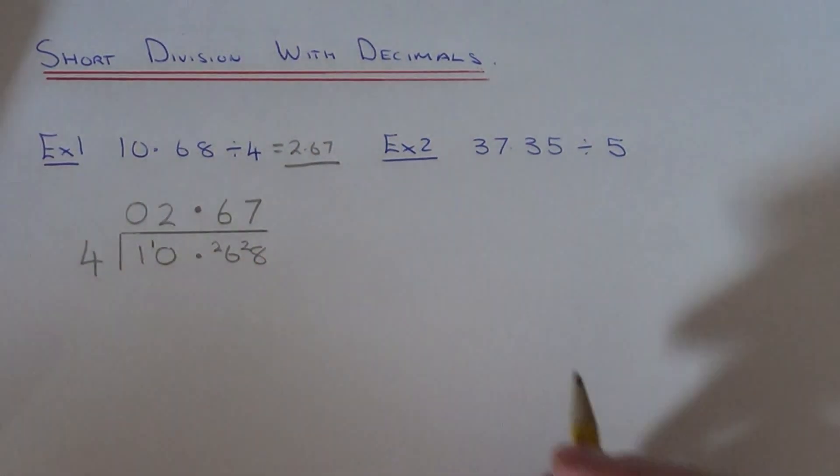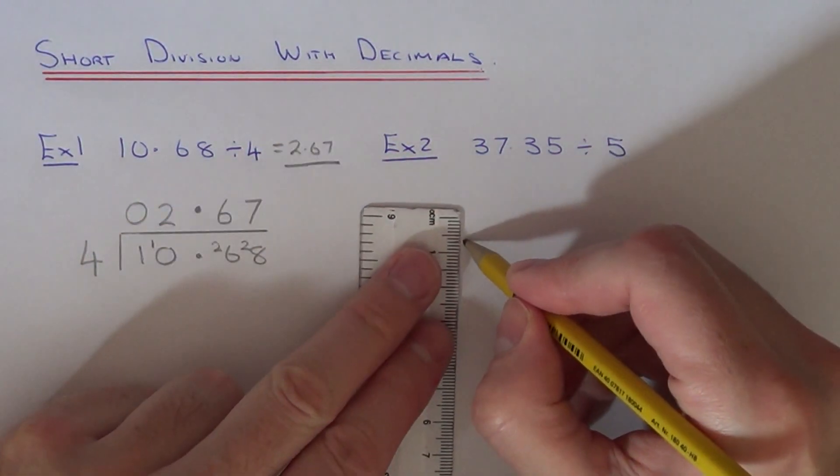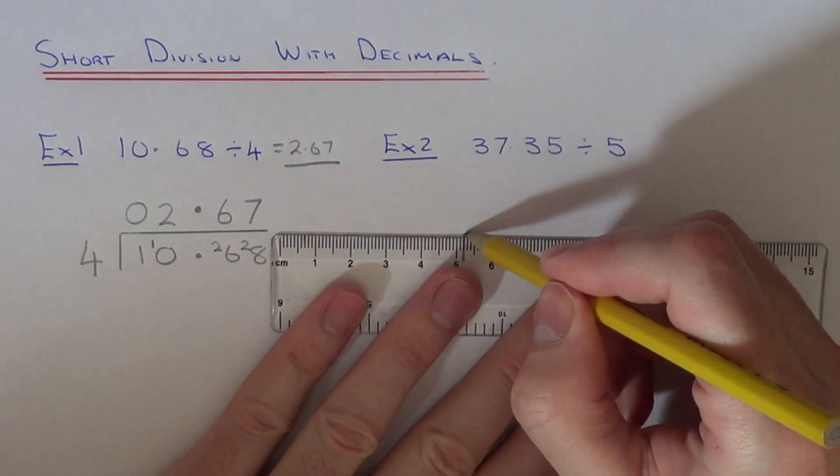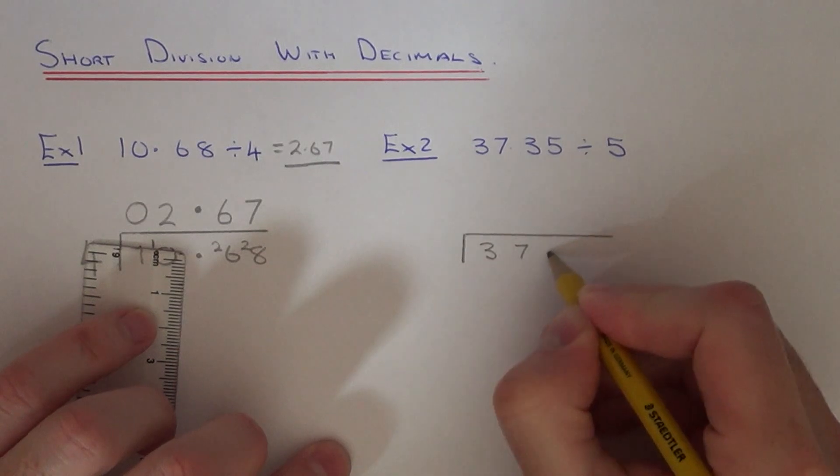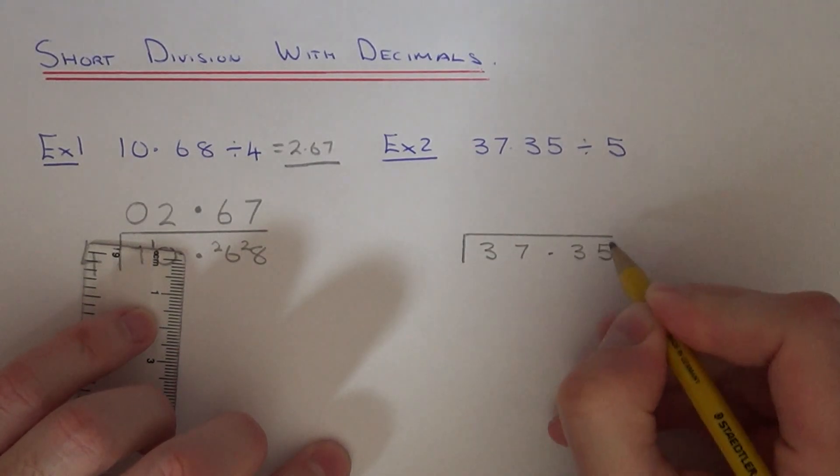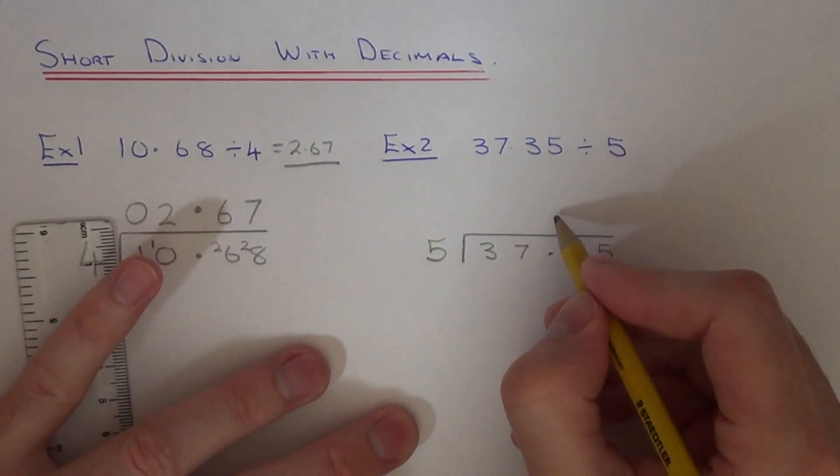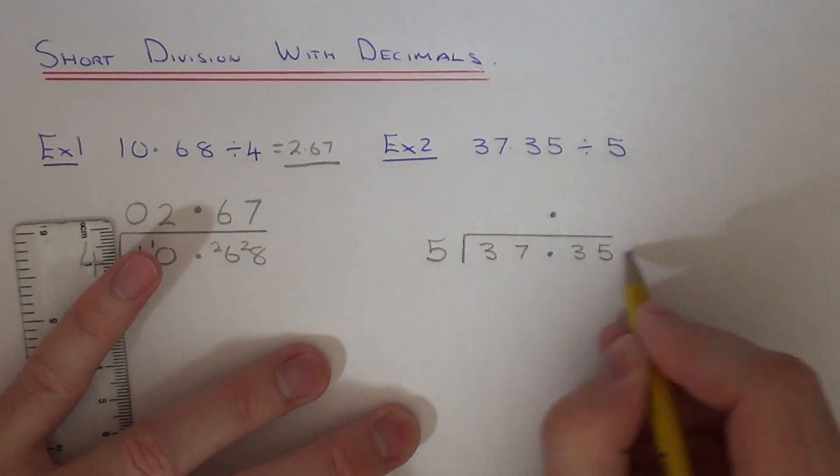Let's move on to the second example. 37.35 divided by 5. Again, set your division out in exactly the same way. We're dividing by 5. Put your decimal point at the top in line with the decimal underneath.